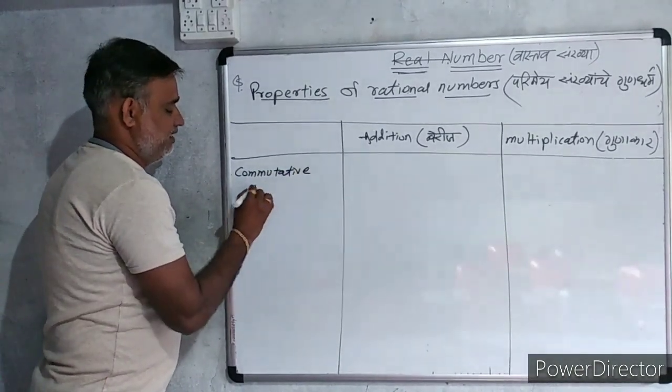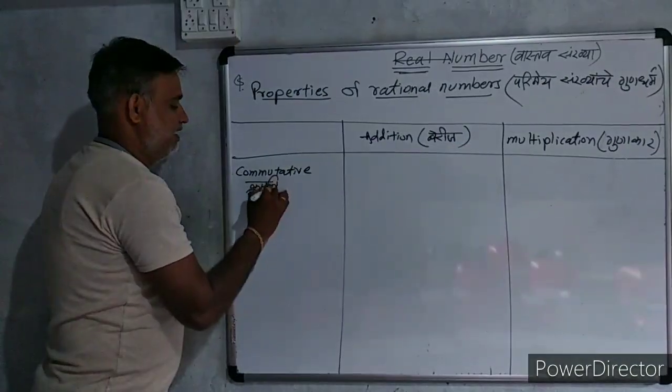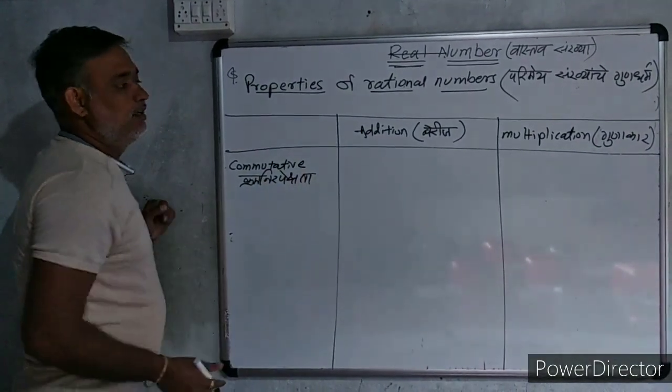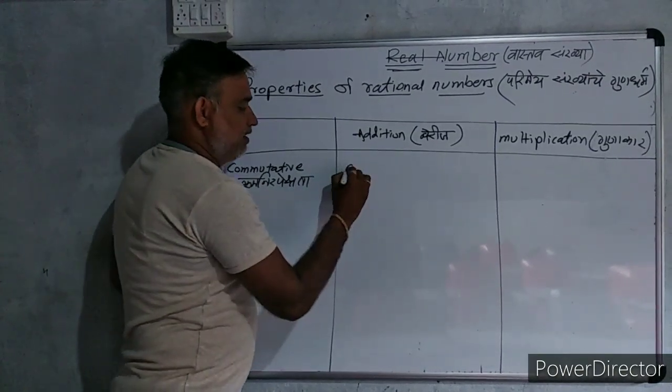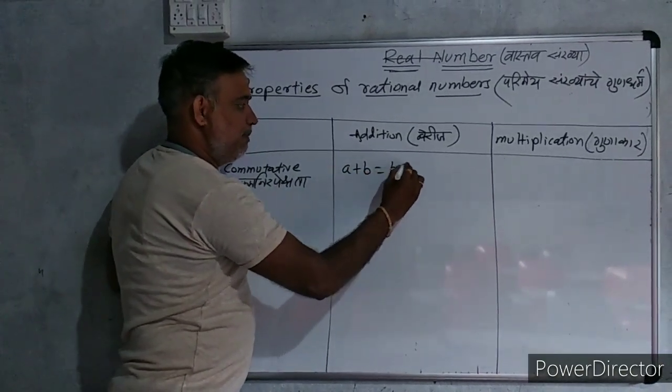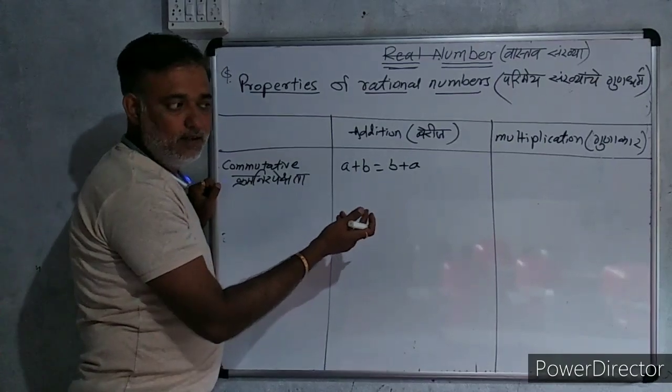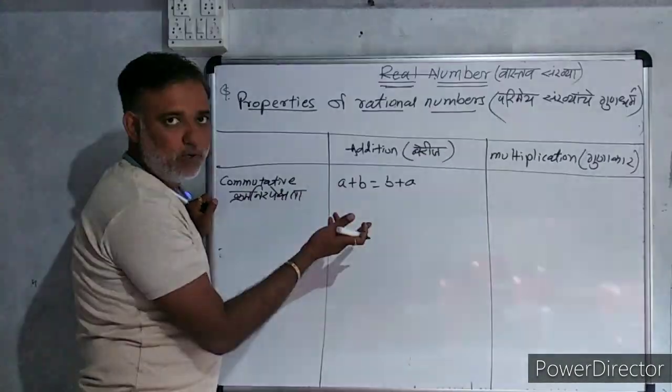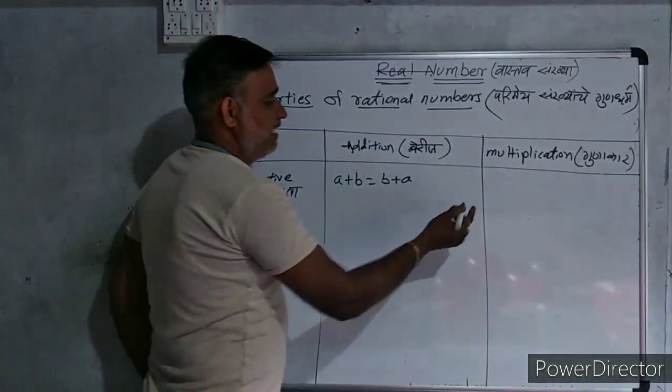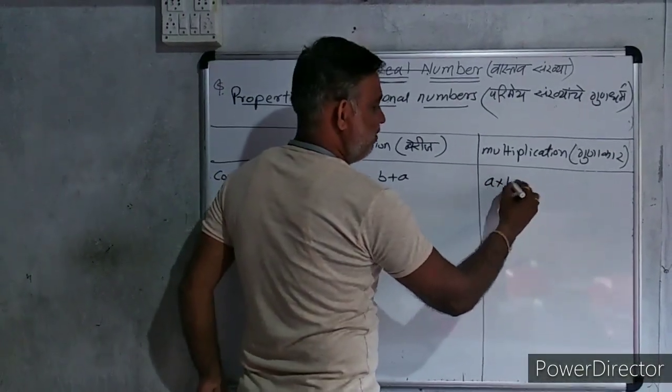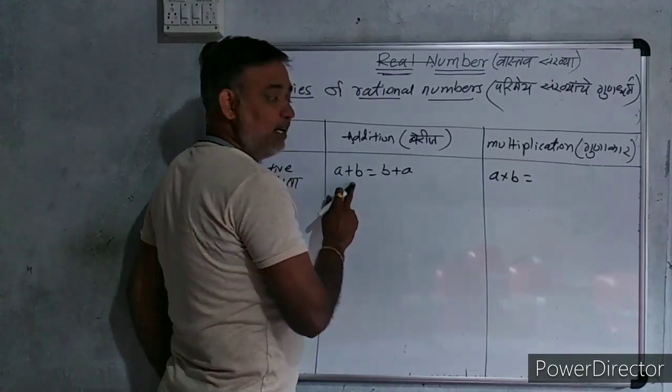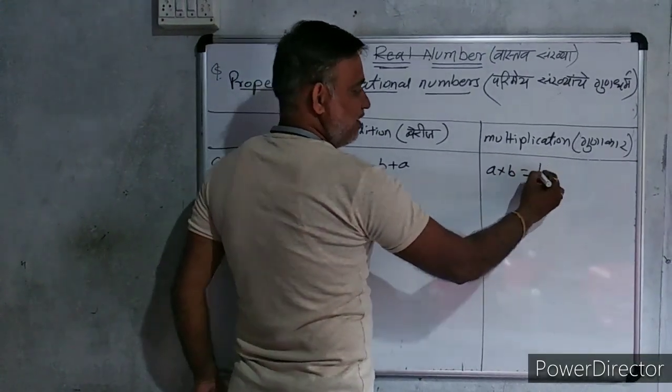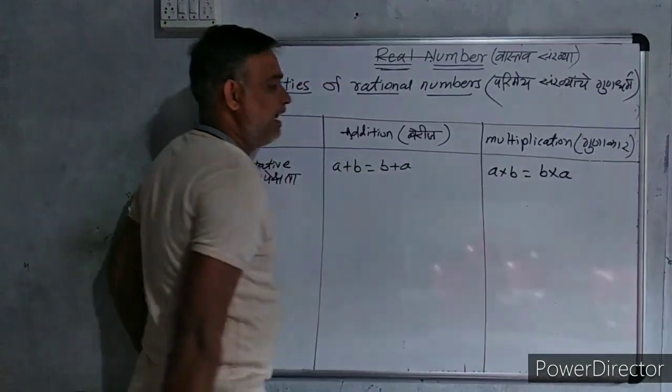Commutative means sequence is not important. In addition, A plus B is equal to B plus A. Means there, sequence is not important. They are always same. In multiplication, we can similarly write A into B is equal to B into A.